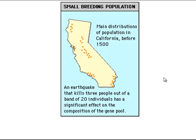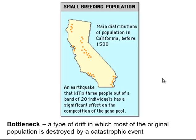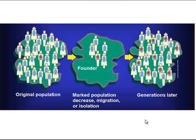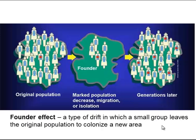One example of drift is the bottleneck effect, which occurs when a catastrophe destroys most of a population, and the survivors may have a very different gene pool than the original. The founder effect is a second type of drift, where a few individuals leave a population and start a new one elsewhere. If those founders have a different gene pool than the original population, that changes allele frequencies and causes evolution.